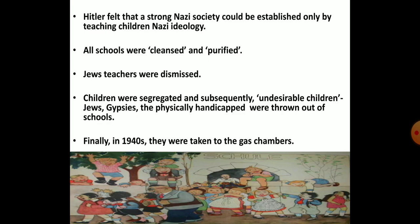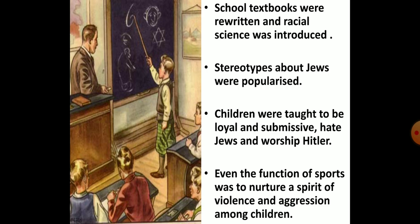Hitler felt that for a strong Nazi society, children should be taught Nazi ideology. Teachers who were Jews or considered politically unreliable were dismissed from schools. German and Jewish children could not sit together or play together. Later, undesirable children — which included Jews, gypsies, and the physically handicapped — were thrown out of schools, and finally in the 1940s they were taken to the gas chambers. Desirable German children had to learn Nazi ideology, and for that, school textbooks were rewritten.